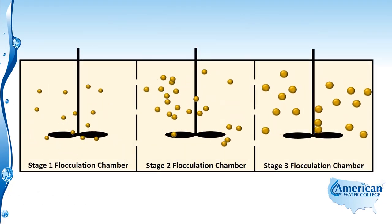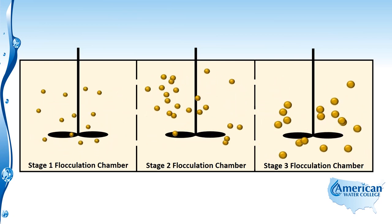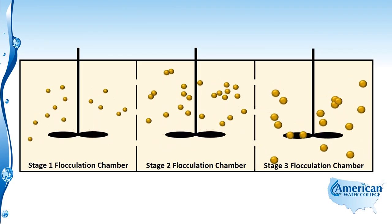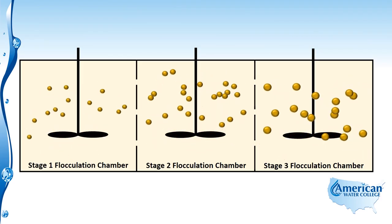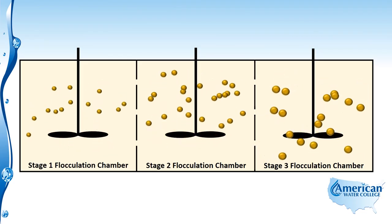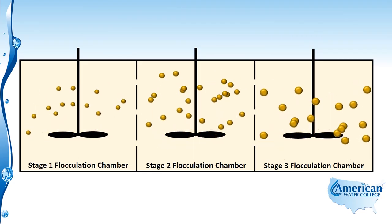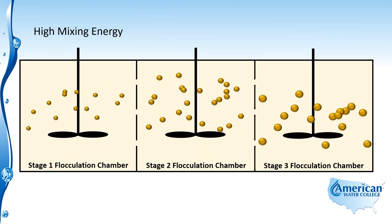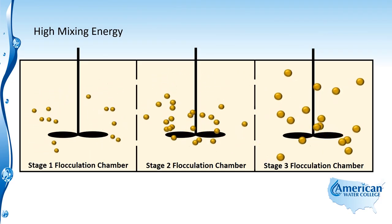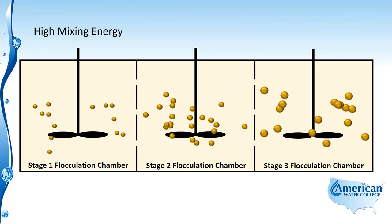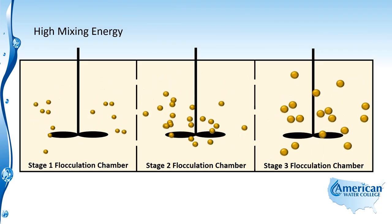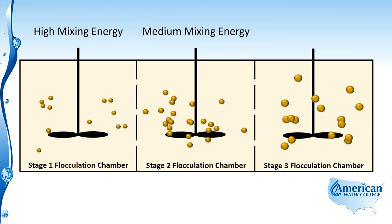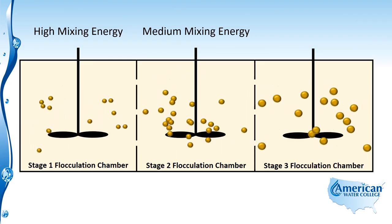Here we have what's called a flocculator. Most flocculators consist of three distinct basins that are separated by baffles, and each flocculation chamber has a different mixing energy. As you can see, in the stage one flocculation chamber you have high mixing energy where the particles are moving around very quickly. In the second stage, the particles have gotten bigger because they've flocked together and are more agglomerated, and the mixing energy is lessened — so we have medium mixing energy.